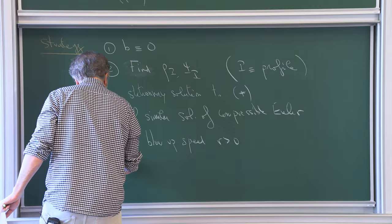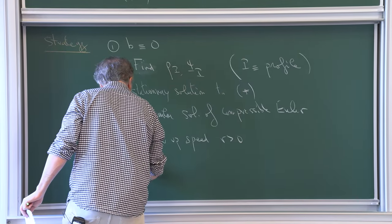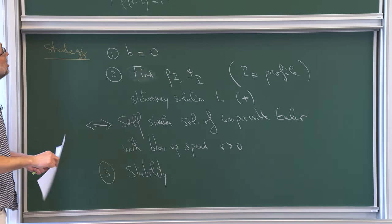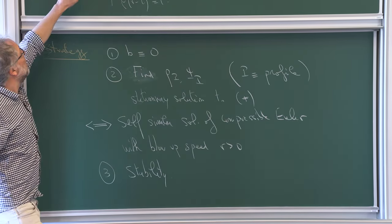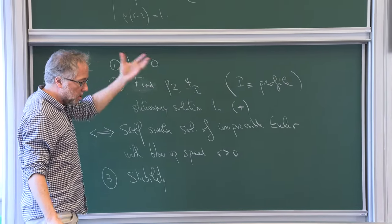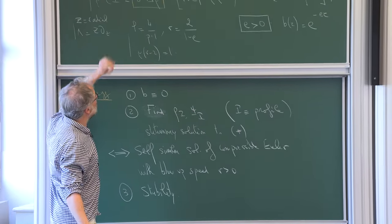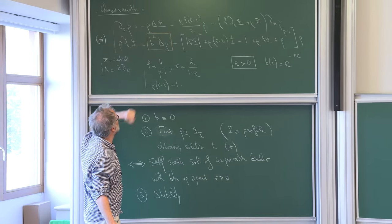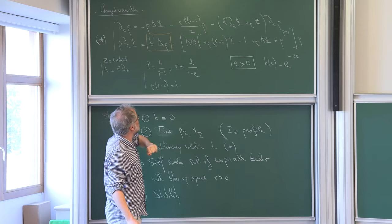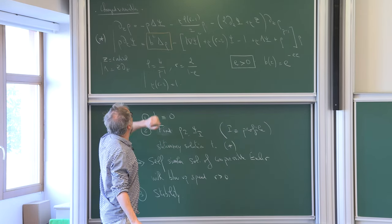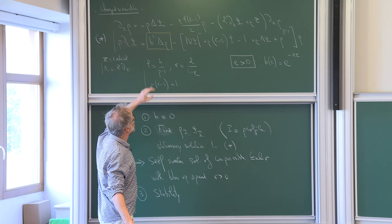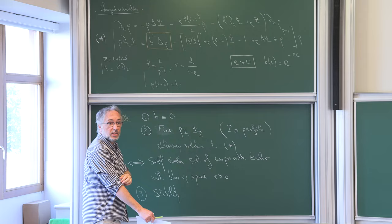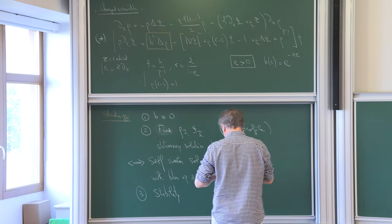Then — and this is what I want to focus on today — study the stability problem. The stability problem is exactly this one. This is after renormalization. If I want to make a blow-up solution of the root problem, I need to construct a global-in-time non-vanishing solution to this equation, by taking my stationary solution and constructing initial data such that the corresponding solution is globally attracted by this profile.